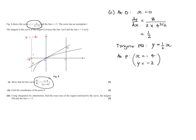The last part asks us to use integration by substitution to find the exact area of the region enclosed by the curve, the tangent, and the line x equals 5. Looking at the graph: here's the curve, here's the tangent, and here's the line x equals 5. We are being asked to calculate this region here. In order to do that we are going to work out the area of the triangle — calling this point M — then subtract the area of the region underneath the curve from that, which will leave us with the value of the green region.